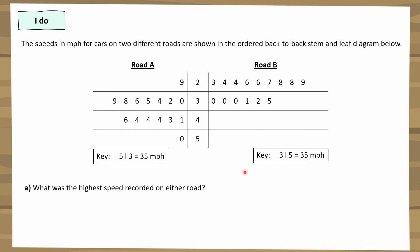Question a: what was the highest speed recorded on either road? Pay attention to whether a question asks about the entire diagram or just one side. Looking at the stems — 20s, 30s, 40s, 50s — the largest stem is 50, and there's only one value there: 50 miles per hour. Note that on the left side, 9 | 2 reads as 29, not 92.